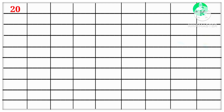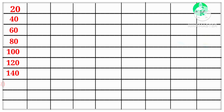20 1s are 20, 20 2s are 40, 20 3s are 60, 20 4s are 80, 20 5s are 100, 20 6s are 120, 20 7s are 140, 20 8s are 160, 20 9s are 180.